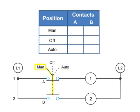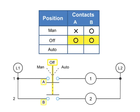Thus, in the MAN position, A is X, or closed, and B is O, or open. At the OFF position, both A and B are O, or open. With the selector switch set to AUTO, contact A is O, or open, and B is X, or closed.